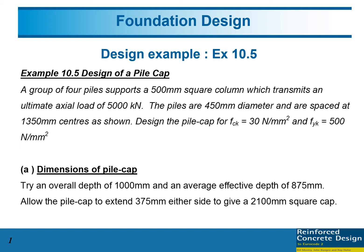The piles are 450mm diameter, circular piles spaced at 1350mm centers as shown in the next slide. The material properties are FCK equals 30 N per square mm and FYK equals 500 N per mm square. In this example, they try to use an overall depth of 1 meter and an effective depth of 875mm.